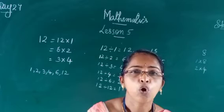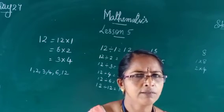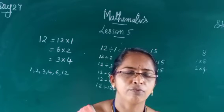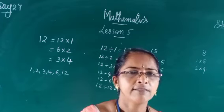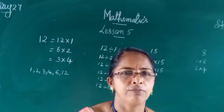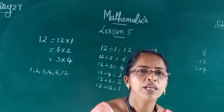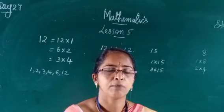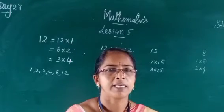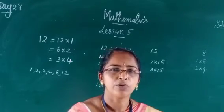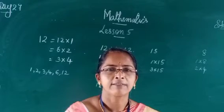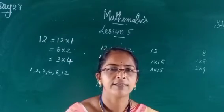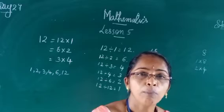Next, we look at common factors. There are four properties of factors: one is a factor of every number; every number is a factor of itself; all the factors of a number are less than or equal to that number; and every number except 1 has at least two factors — 1 and that number itself.